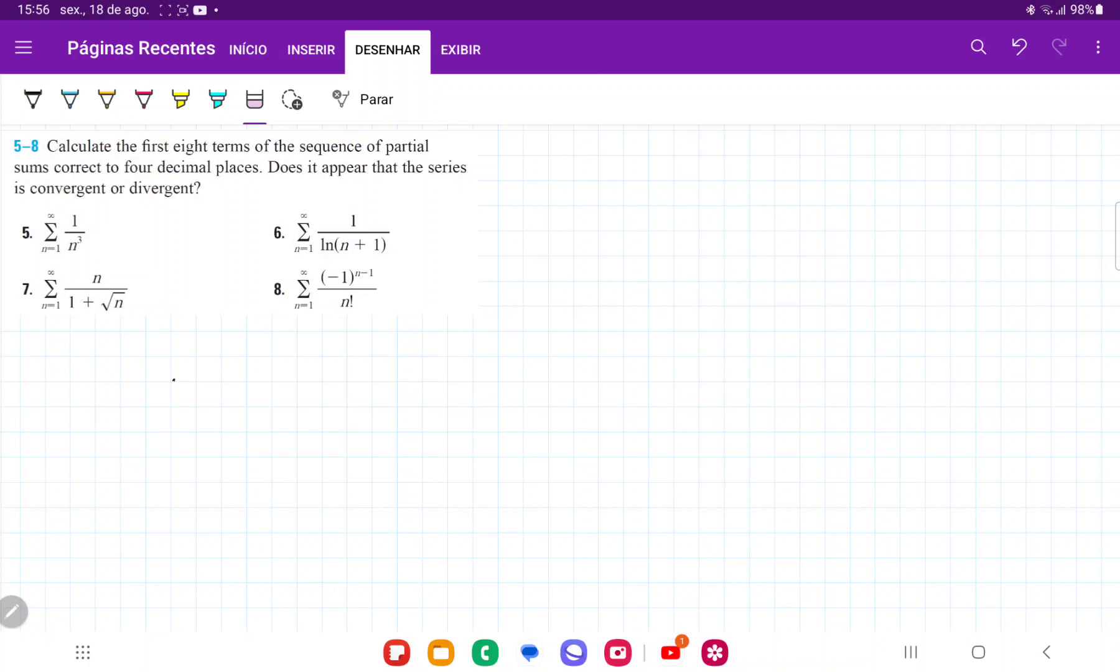So we plug in n equals 1, sum that to n equals 2, and so on. The first sum, S(1), well, we have nothing to sum except the first term. That's going to be equal to (-1) to the power of 1 minus 1, which is 0, over 1 factorial. So (-1)^0 is 1 over 1, which gives us 1.